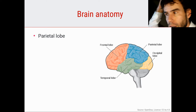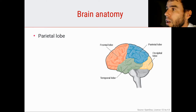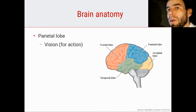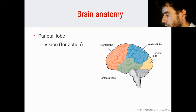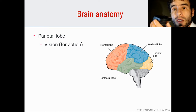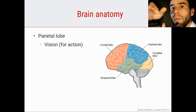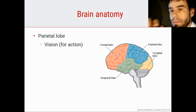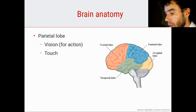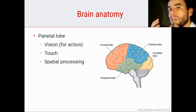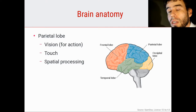Then we have the parietal lobe, up here. That lobe does various things. It is also involved in vision — a lot of our brain is involved in vision — but it's primarily involved in vision for action: transforming vision into something that you do. For example, if I have my mouse here, I can see it and recognize it, but what the parietal cortex mostly does is allow me to pick it up and interact with it in an appropriate way. It's also involved in touch and spatial processing, since interacting with things is something you do in space.